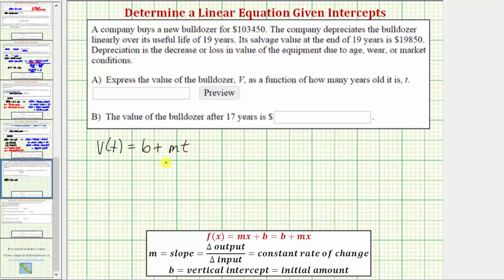Now, for the next step, let's write the given information as ordered pairs, where each ordered pair is going to be in the form of the input, comma, the output, which in this case will be t, comma, V(t), where t is the age of the bulldozer and V(t) is the value.